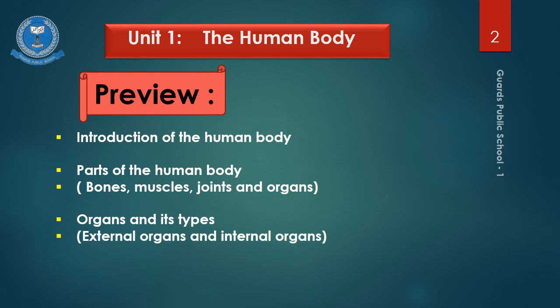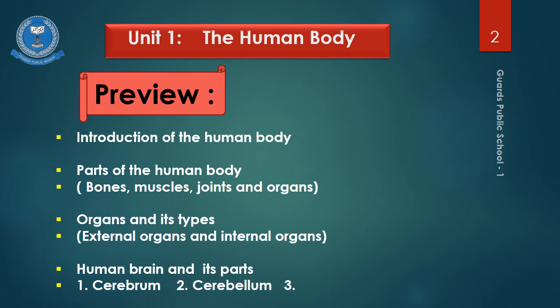We had also talked about the human brain. Do you remember what is the function of the human brain? The brain is the control center of the body. It controls all the systems and organs. Can anybody tell me how many parts a human brain has? Yes, there are three major parts: number 1, Cerebrum; number 2, Cerebellum; and number 3, Medulla.